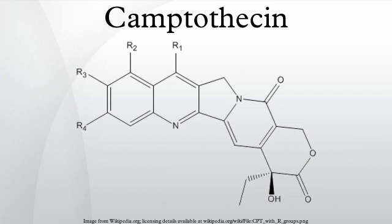Silatecans, or 7-silylcamptothecins, have shown reduced drug-HSA interactions which contributes to blood stability, and they can also cross the blood-brain barrier. DB-67 is a 10-hydroxy derivative and is among the most active silatecans. BNP1350, which belongs to the series of karenitecins, exhibits cytotoxic activity and the ability to overcome drug resistance. Introducing lipophilic substituents such as aminomethyl or oxyaminomethyl moieties is another route to make CPT lipophilic.